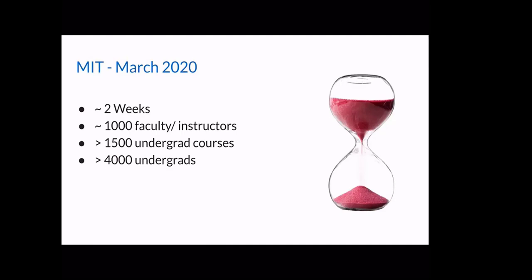Like many campuses across the world, at some point we realized that we couldn't all be on campus anymore. For MIT that was early March 2020. In the course of about two weeks, we sent all the undergraduates home. We were in the position of trying to get roughly 1,000 faculty and instructors ready, with around 1,500 undergraduate courses and about 4,000 undergraduates, and we had to get everything ready to enable those students to learn within about two weeks. Most campuses experienced similar things, but it was a daunting task - nobody was prepared for it.